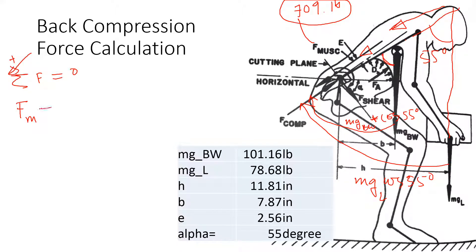If I do that, it will be the erector spinae muscle force acting downwards to the spine, plus the body weight mg, which is mass times gravity, times cosine 55 degrees, plus the load carried on the hand times cosine 55 degrees, plus the compression force Fc. Everything sums to zero.